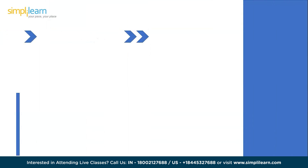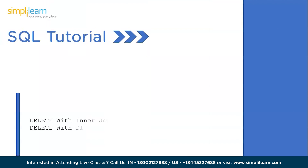We can eliminate duplicate records in SQL by a few methods. We will use the simplest ones. The first is using the INNER JOIN along with the WHERE clause, and the second is the simple DISTINCT command. Now that we have a brief idea on the methods, let's understand them in detail through a practical demonstration.